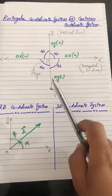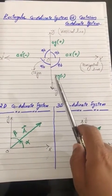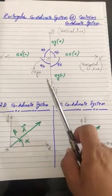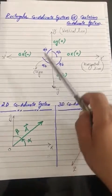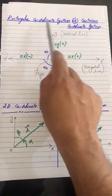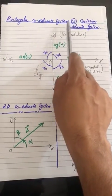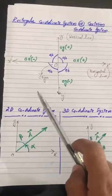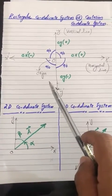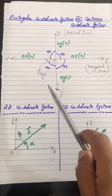Yes, dears. Assalamu alaikum. Today's lecture is a very important lecture. That is the rectangular component system, or rectangular coordinate system, or partition coordinate system. We call it rectangular coordinate system or partition coordinate system. What is it?